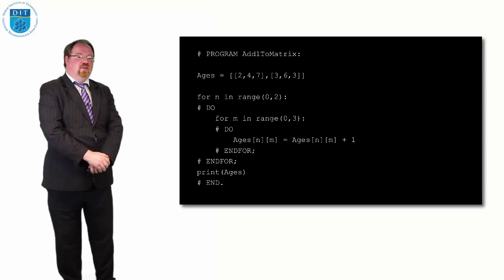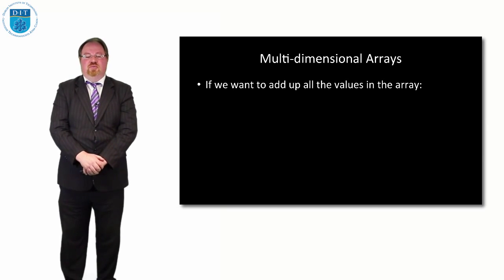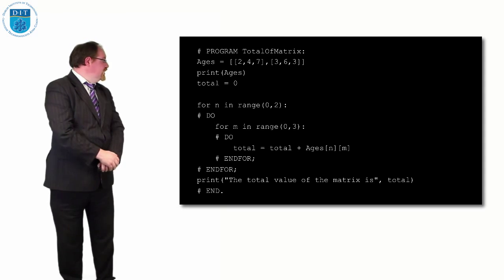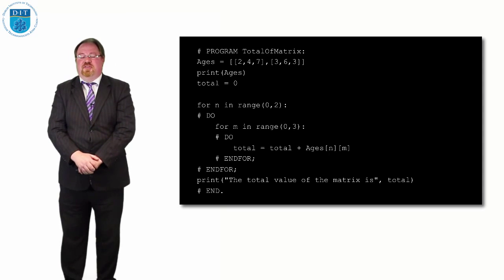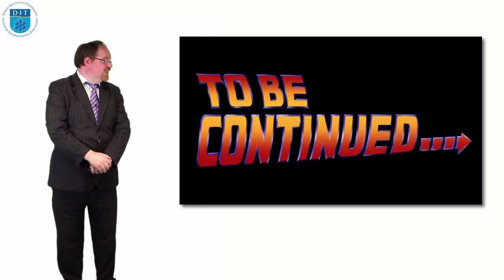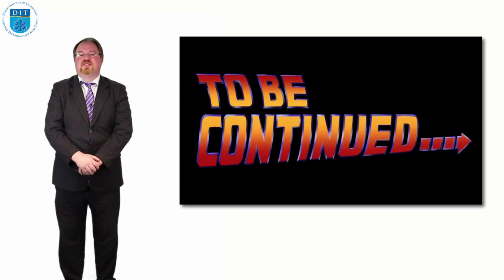If we want to add up all the values in the array, all we do is have a counter called total and we add each value in the array to total each time. Then we can print out the total of the array. It's very straightforward stuff. You can figure out how to get an average from that. If there are six values in the array and we divide that total by six, we'll get the average value. So play with that.